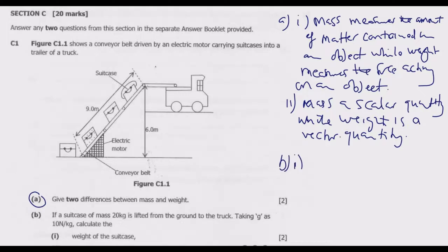Part B Roman numeral one: If a suitcase of mass 20 kg is lifted from the ground to the truck, taking g gravity to be 10 Newton per kg, calculate the weight. Weight equals mass times gravity, so mass is 20 kg multiplied by 10 Newton per kg. The kg cancels, then 20 times 10 equals 200 Newtons. This is the weight.